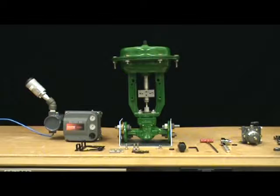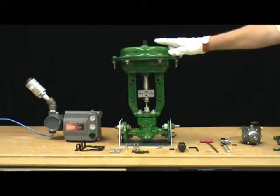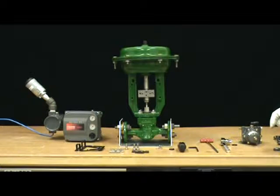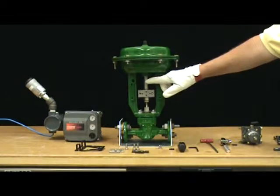We're going to be mounting a DVC 6200 on an air-to-open GX. Air-to-open can be identified by a vent in the top casing. We also have to identify the proper yoke side to mount the digital valve controller. Note the casing supply connection on the yoke leg.